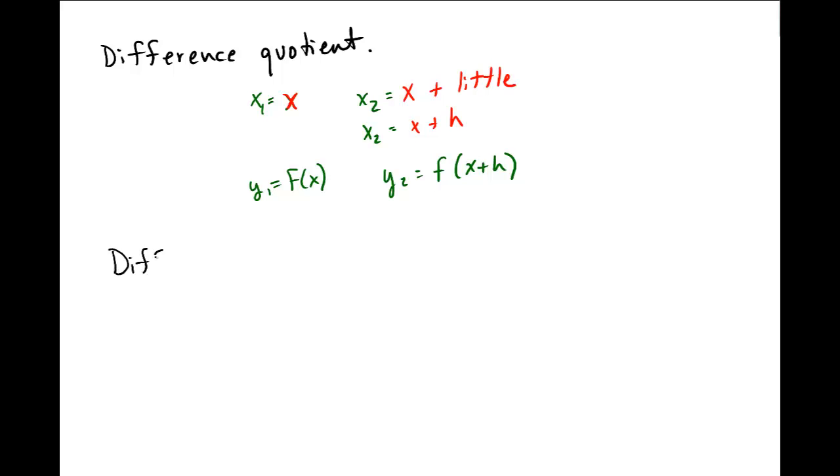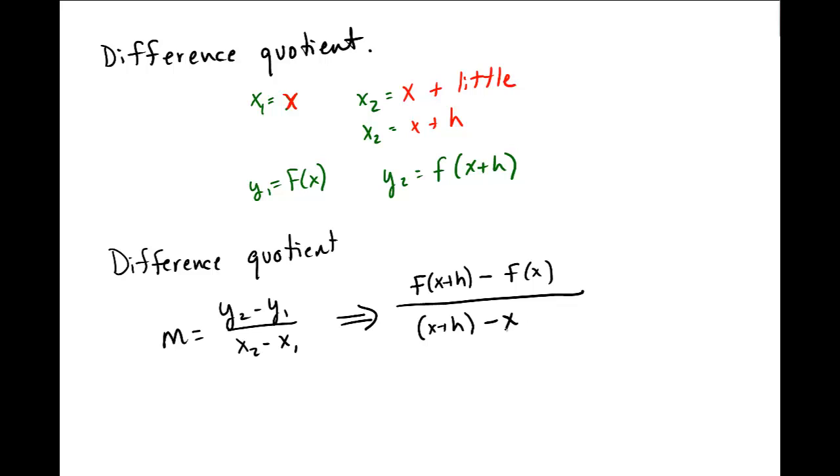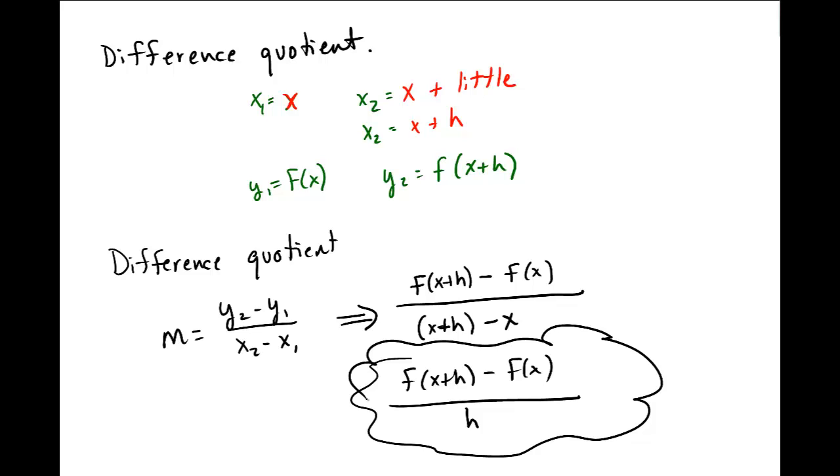And then that means the difference quotient looks something like this. Let's write it down. The actual difference quotient from slope again: y2 minus y1 over x2 minus x1. And the difference quotient is f(x + h) minus f(x) divided by x + h minus x. This denominator simplifies, so most of the time you'll see this written as f(x + h) minus f(x) and I get x minus x, those cancel, and I just get an h down here. This right here is the difference quotient, f(x + h) minus f(x), all divided by h.